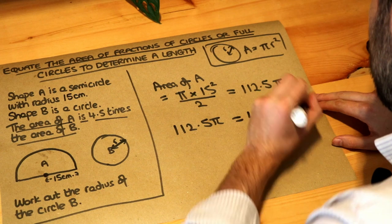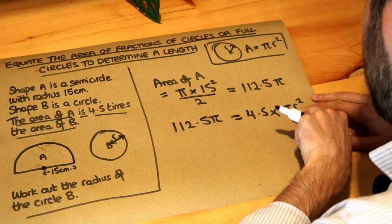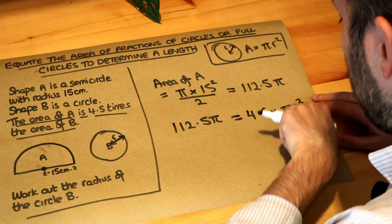Now if B has a radius of R, the area is just πR². So it's πR². That's the area. So the area of A is 4.5 times the area of B where we've got some unknown radius R.